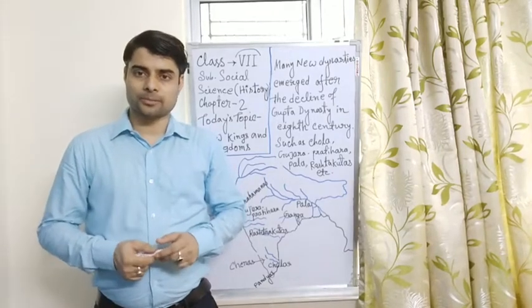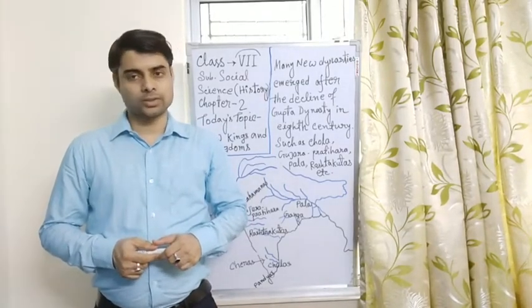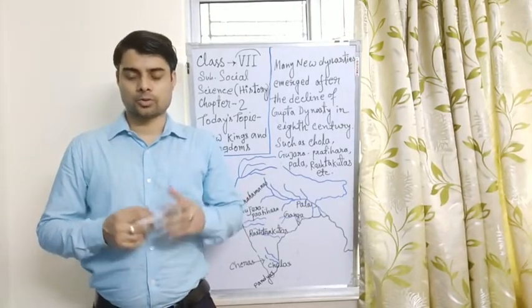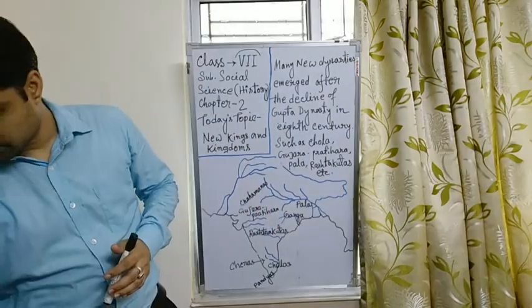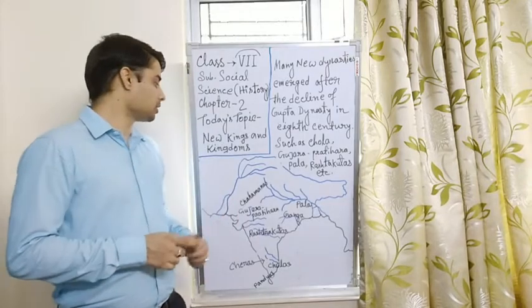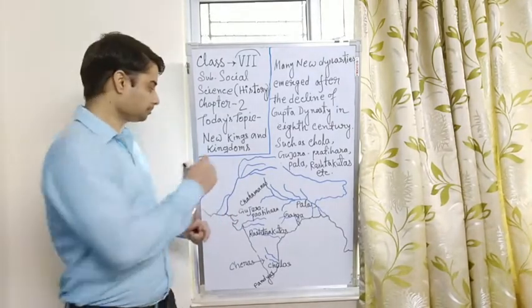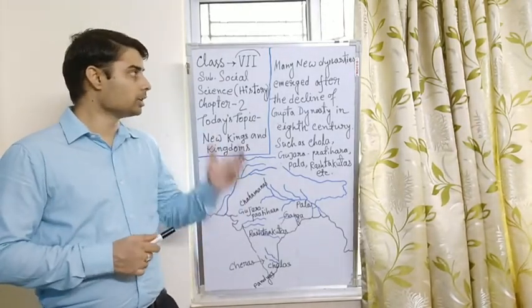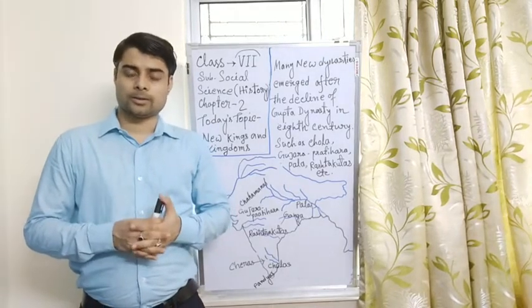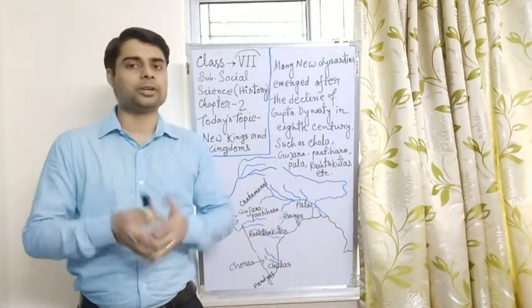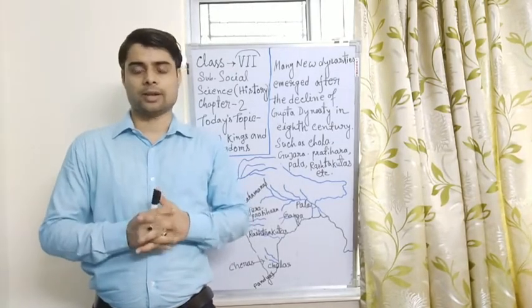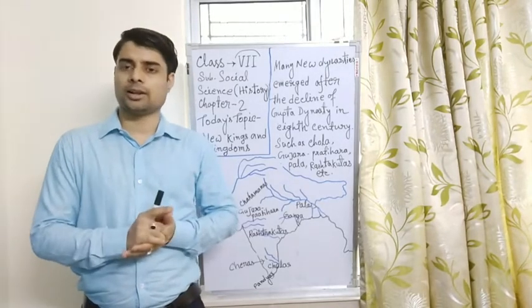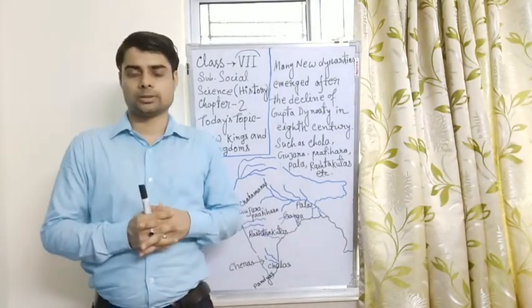Welcome to the students of class 7. Today we are going to discuss a new chapter from your history lessons. Just open your book to page number 16. The name of the chapter is The New Kings and Kingdoms. In this chapter we will learn how in the medieval period some different kings emerged and they spread their kingdoms and what are the political rivalry and the economic and social features of those kingdoms.